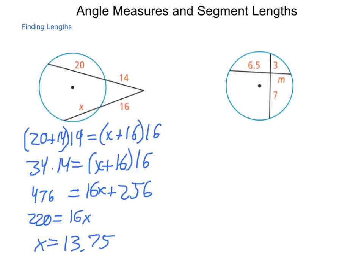Now, on our other side, we have a case 1 situation. So that case told us that the products of the segments would be equal. So that means that 3 times 7 will equal 6.5 times M. 3 times 7 is 21, so 21 equals 6.5M.